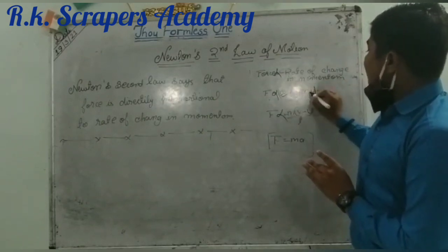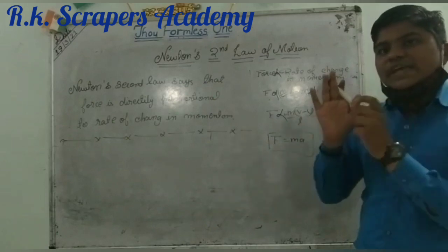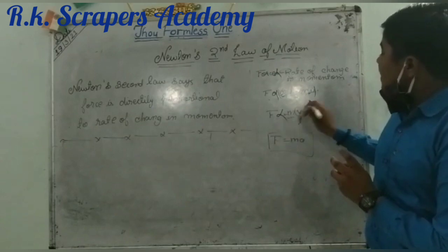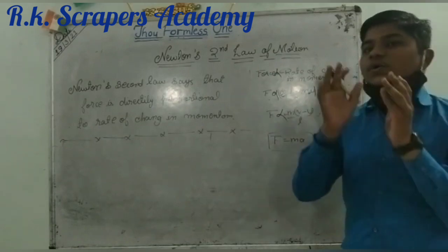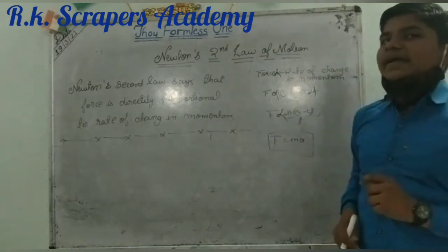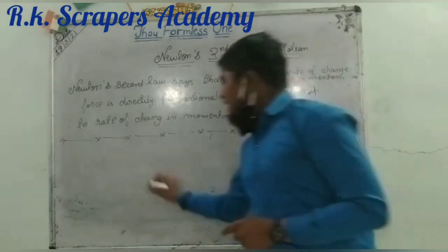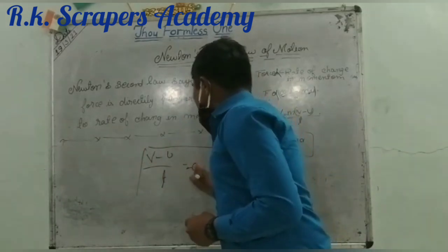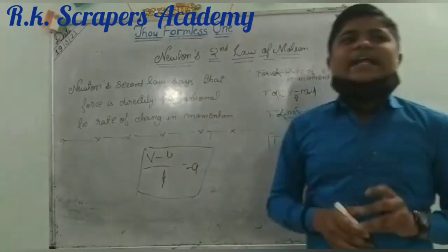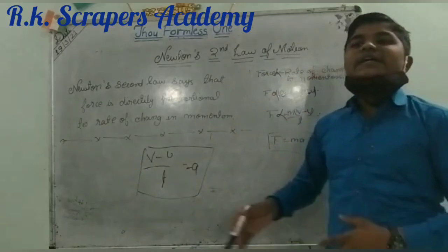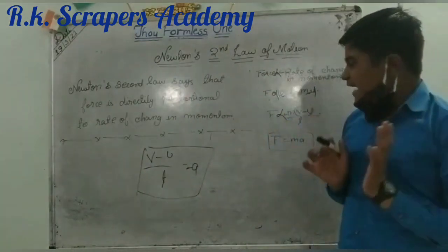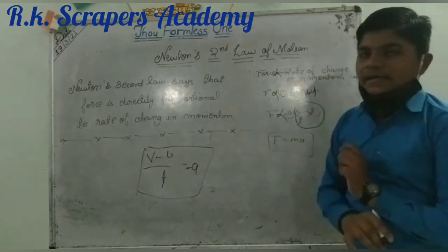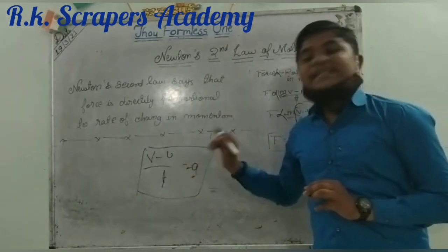Now what happens here is that m is common, so we keep it outside the bracket. Force is directly proportional to m times the quantity (v minus u), all over time. Now what is v minus u upon t? As you may have learnt, v minus u upon t is the formula for acceleration. I think you know this because it was taught in 8th class also. So here, leaving v minus u upon t, we can write acceleration, that means a.